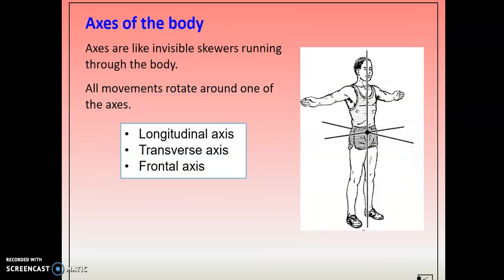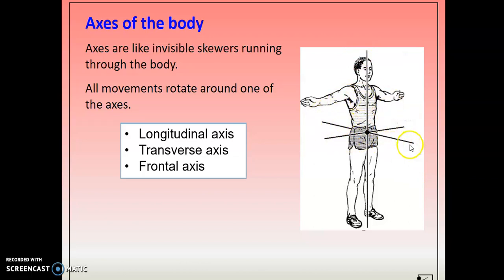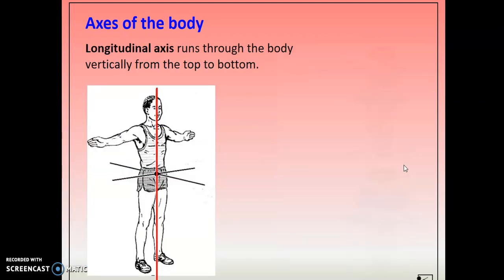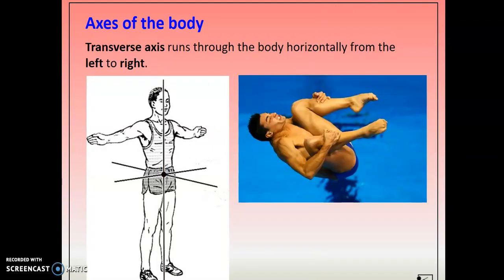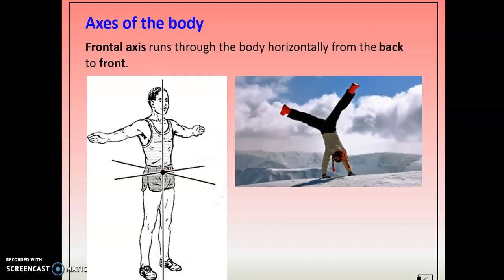For axis of rotation, the longitudinal axis goes through the length of your body from head to toe — L for length, L for longitudinal — and allows spinning, like a 360 spin. The transverse axis goes through the body side to side, through one hip and out the other — allowing movement like a somersault. The frontal axis goes through your front and out your back, allowing side-to-side movement like a cartwheel.